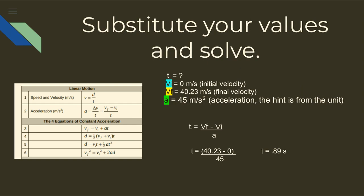Once you have isolated T, you can substitute your values and solve for time. Remember that if you hadn't converted the 90 miles per hour final velocity, your answer would look drastically different.